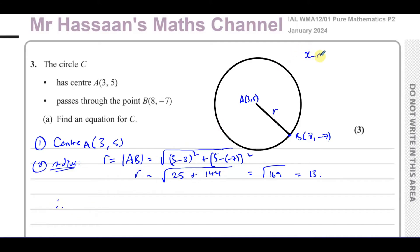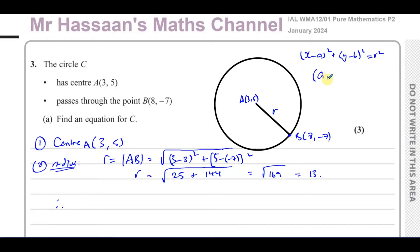So therefore we can use the formula: (x minus a) squared plus (y minus b) squared equals r squared. That is the formula for the equation of a circle. A and B is the center of the circle, and R is the radius of the circle.